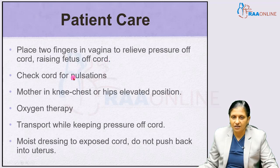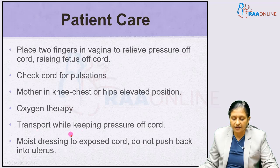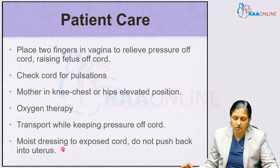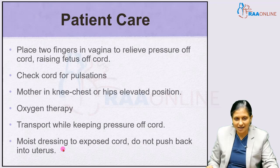Check the cord to see whether it is pulsating or not. The mother can be placed in the knee-chest or hip-elevated position, and oxygen therapy should be given. Transport the mother to a tertiary care health institute while maintaining pressure off the cord by keeping her in the knee-chest or hip-elevated position. The cord should not be exposed to the outside; it should be wrapped in a moist sterile pad. Do not try to push the cord back into the uterus — just place the cord inside the vagina and cover the vaginal opening with a moist pad.